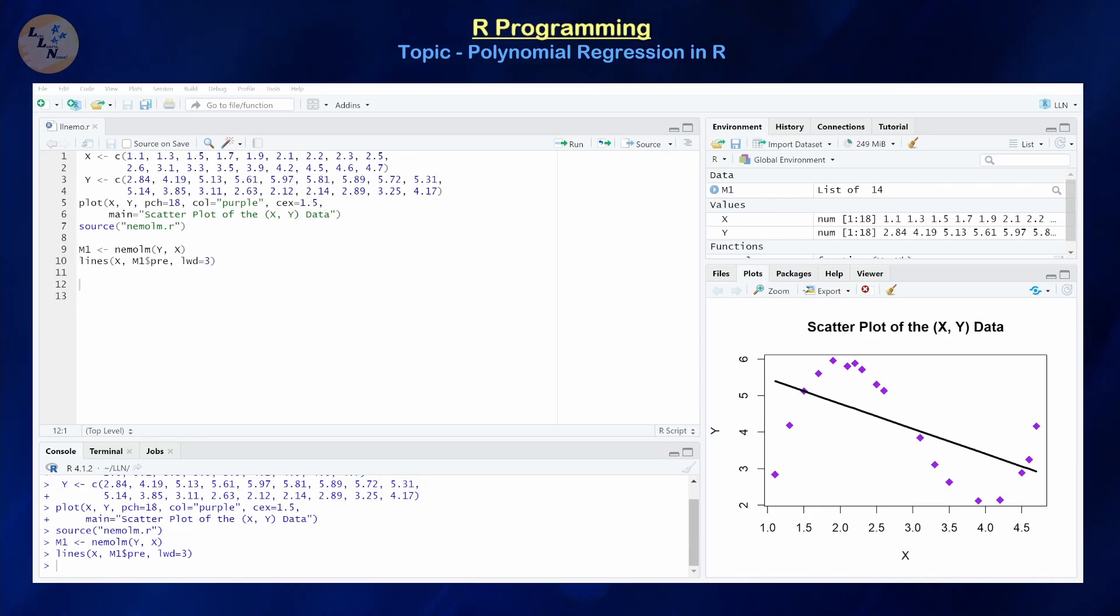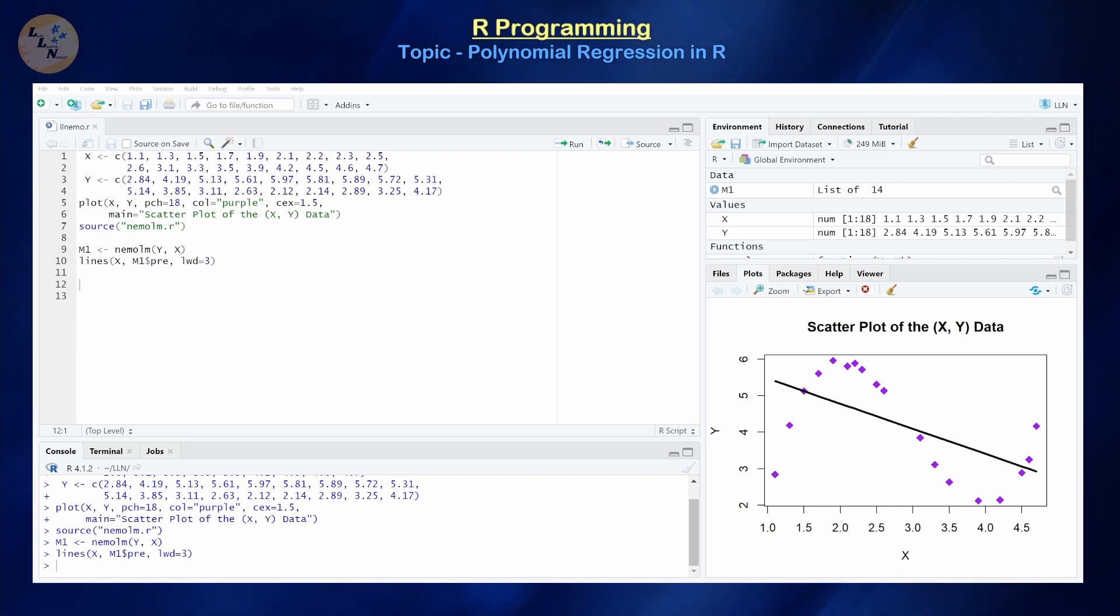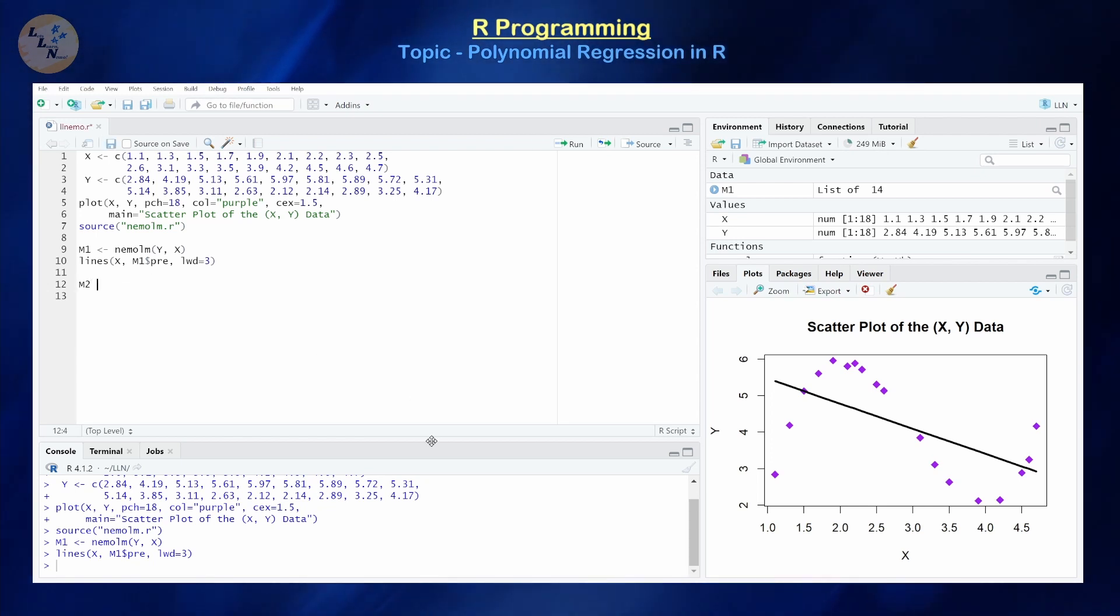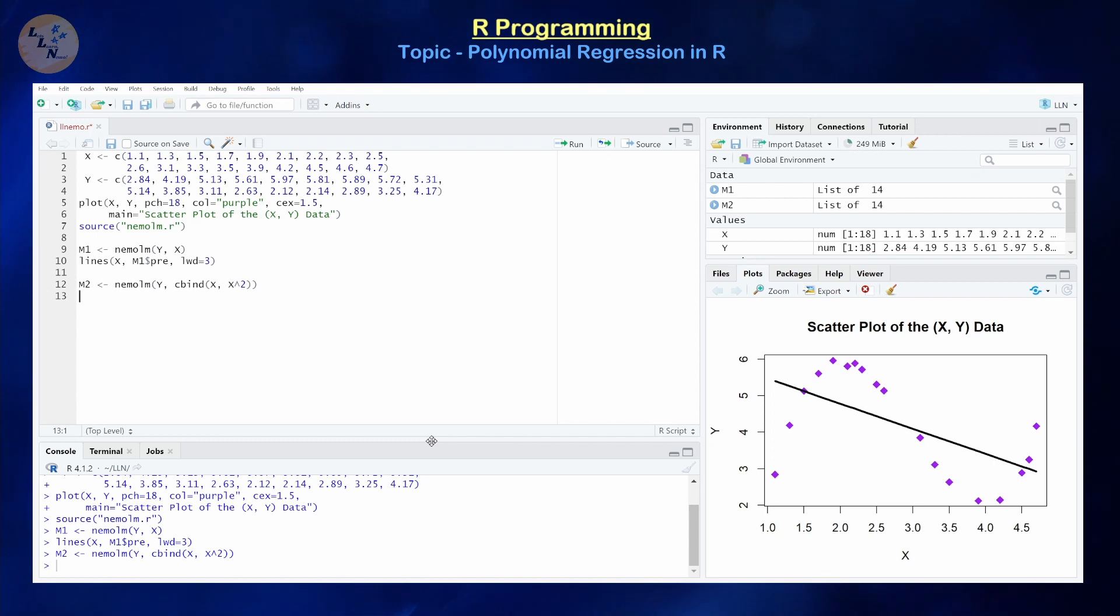Now since we have at least qualitatively confirmed that a linear model is not appropriate, what is the next model that we should consider? So if we're considering only polynomial models, the next degree up will be a degree 2, which is known as a quadratic model. So in order to construct a quadratic model, what we're going to feed our LM function this time is Y, and then we're going to feed it two vectors, the X value and the X squared vectors. Alright, so that's going to create our quadratic model with minimal effort, and then we're going to plot these data points to see if that's a better fit.